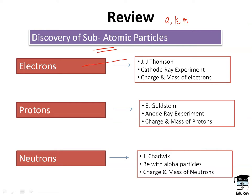Electrons were discovered by J.J. Thomson. The experiment was the cathode ray tube experiment, and the charge and mass of electrons were determined. Protons were discovered by Goldstein through the canal ray experiment, and the charge and mass of protons were determined. Neutrons were discovered by J. Chadwick through the bombardment of beryllium with alpha particles, and the charge and mass of neutrons were determined.